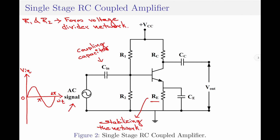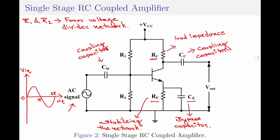The capacitor across the emitter resistance, which is CE, is called the bypass capacitor. This bypass capacitor passes only AC signal while restricting the DC signal. This causes only DC voltage to drop across the emitter resistor RE, while the entire AC voltage will be coupled to the next stage. The resistor at the collector terminal RC is used as the load impedance. The capacitor CC, connected at the collector terminal, is again a coupling capacitor and it is used to couple the output signal of the amplifier circuit to the next stage.